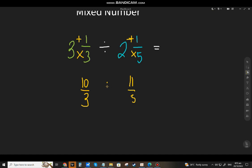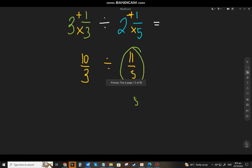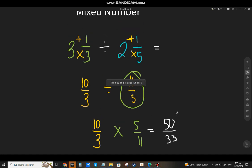And we divide it. The division is the reciprocal of the divisor, that will be 5 over 11. Change the division sign to multiplication and copy paste the 10 over 3. Then we can simplify.